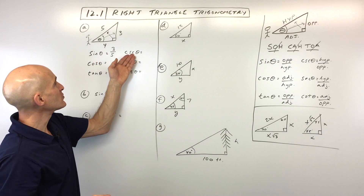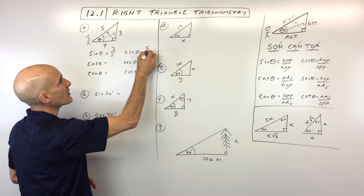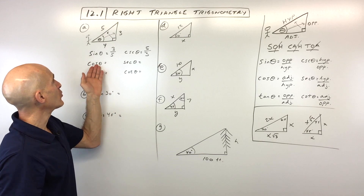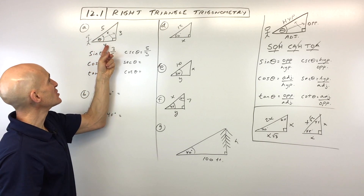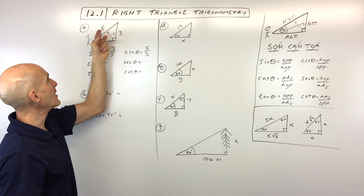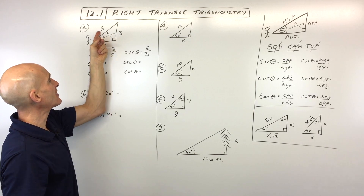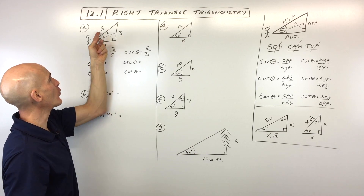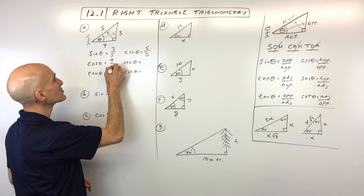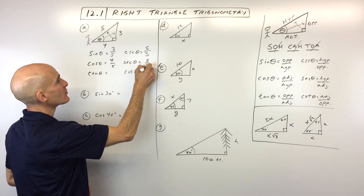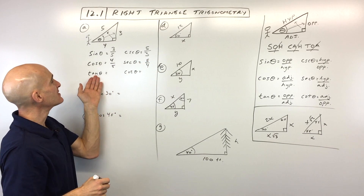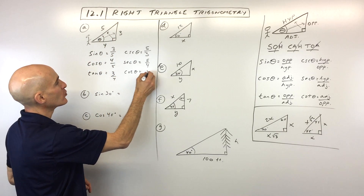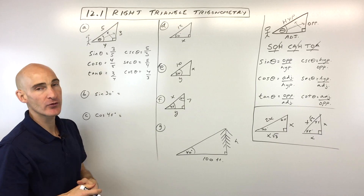If we want to find the cosecant of theta, all we do is take the reciprocal of the sine, so it's five-thirds. The cosine is adjacent over hypotenuse — adjacent is next to the angle but not the hypotenuse — so that's four over five. The secant is just the reciprocal: five over four. The tangent is opposite over adjacent, so that's three over four. And the cotangent is just the reciprocal: four over three.